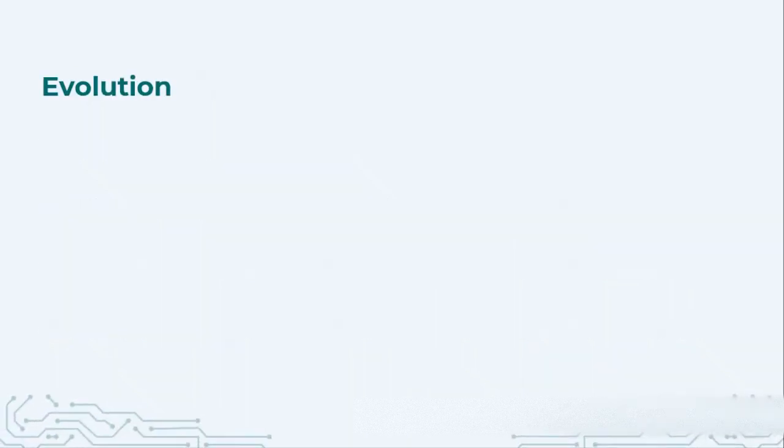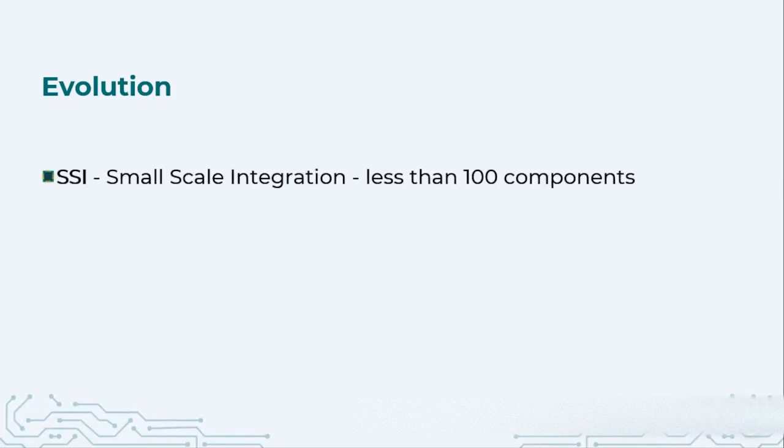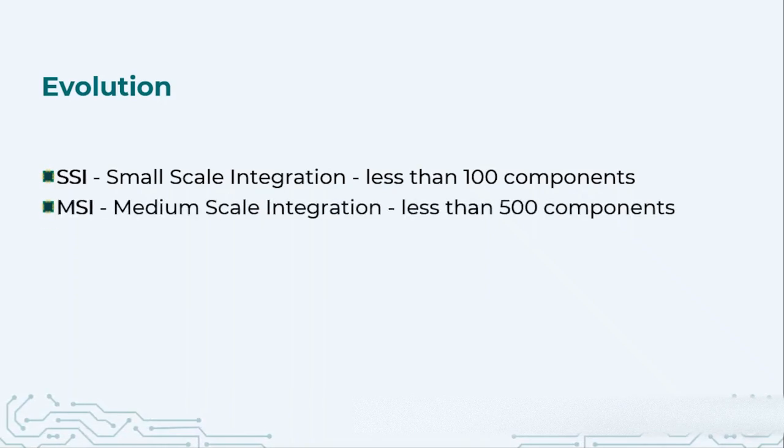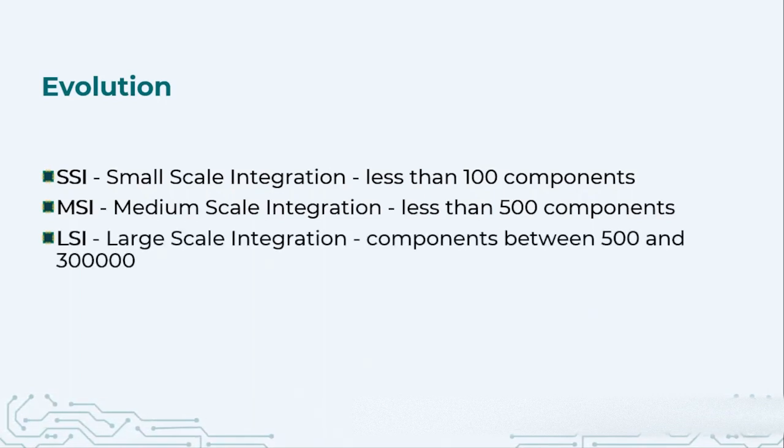Let us talk about this evolution now. We started with SSI, which is small scale integration, where we were putting together less than 100 components on a single chip. Then came medium scale integration, where we just enhanced the number of components by around 5 times and we were able to integrate around 500 components. Then came large scale integration, where we are able to integrate around 30,000 components also.